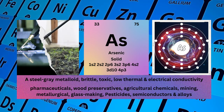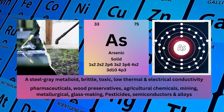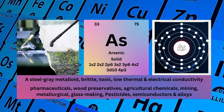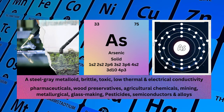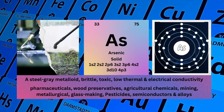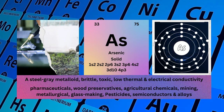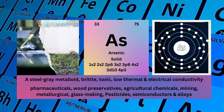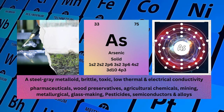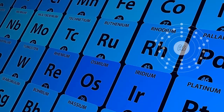Physical properties: a steel-gray metalloid, brittle, toxic, low thermal and electrical conductivity. Arsenic used for pharmaceuticals, wood preservatives, agricultural chemicals, mining, metallurgical, glassmaking, pesticides, semiconductors and alloys.